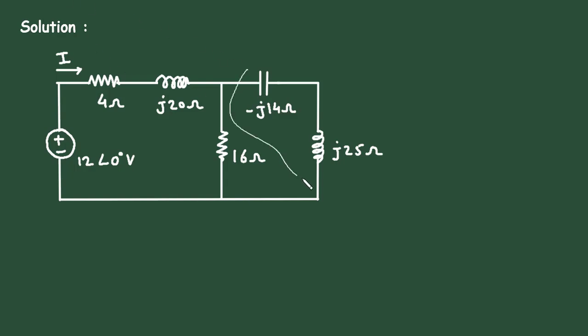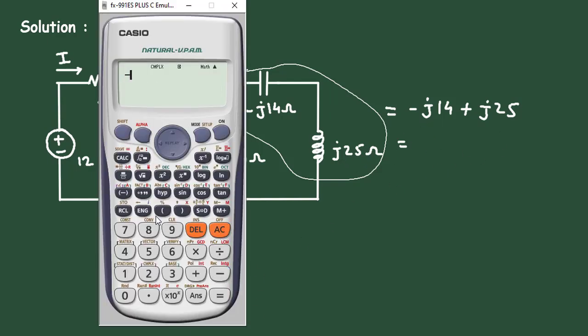So this is equal to -j14 + j25. We can directly solve this in calculator: -j14 plus j25. So it is 11j.